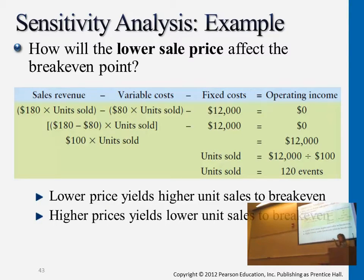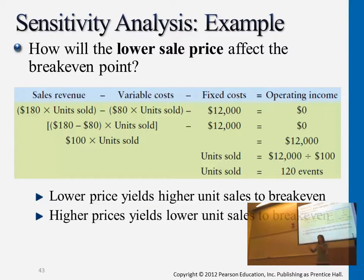Because in order to make the equation — sales minus total cost equals zero — if you change the sales portion and lower it per unit, you need to make more sales. You need more customers in order to break-even. Each and every customer is generating less contribution margin. Earlier we had $120; what's the new contribution margin? Only $100, right? Earlier we had $200 minus $80; now we only have $180 minus $80. So for every customer, we're generating contribution margin of $100 per event. Since we have a lower contribution margin, we need to increase the units we're selling in order to break-even. This is the first example: changing sales price.